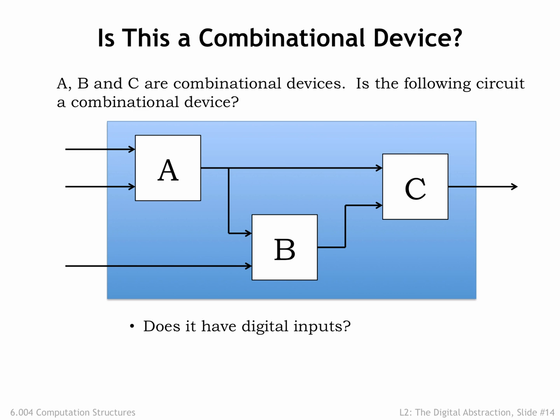First, does the overall system have digital inputs? Yes! The system's inputs are inputs to some of the component devices. Since the components are combinational, and hence have digital inputs, the overall system has digital inputs. In this case, the system is inheriting its properties from the properties of its components.